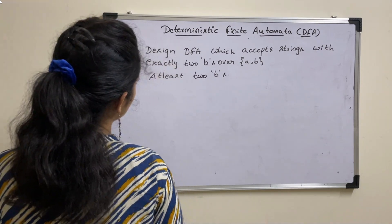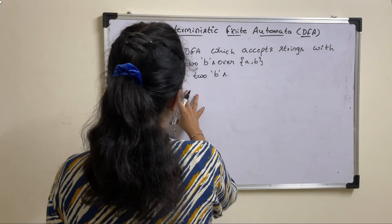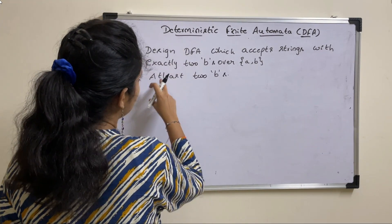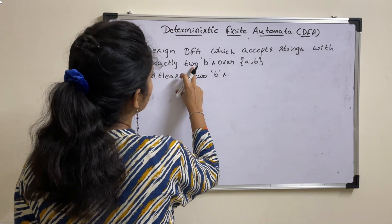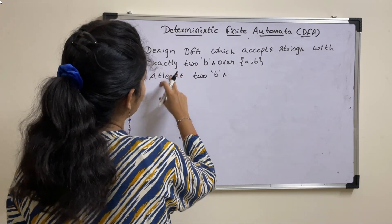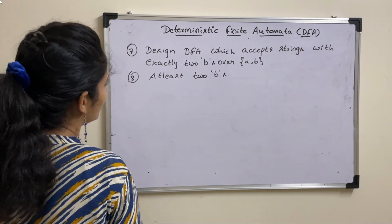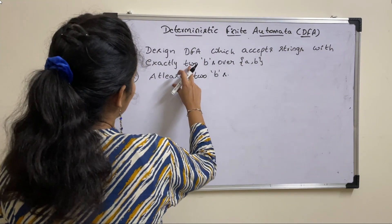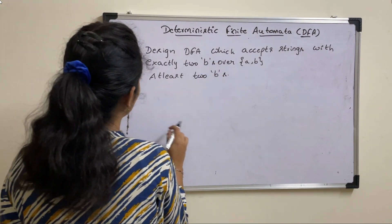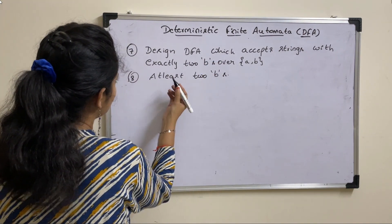In our last lecture we saw strings, we saw how to design DFA with exactly one B and at least one B. Now we will see more than one B's and exactly two B's.